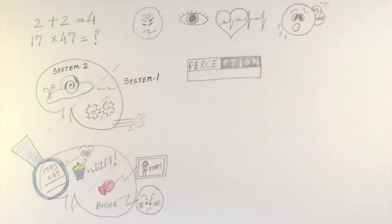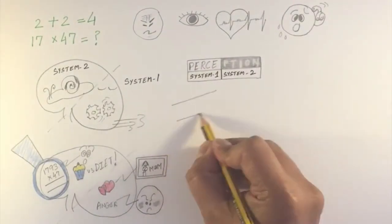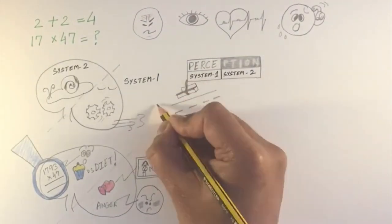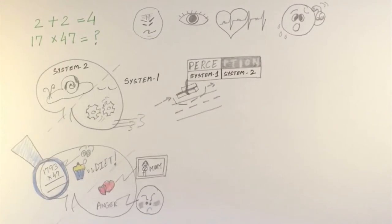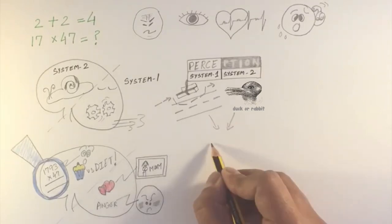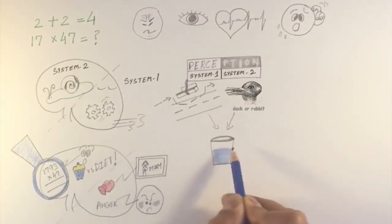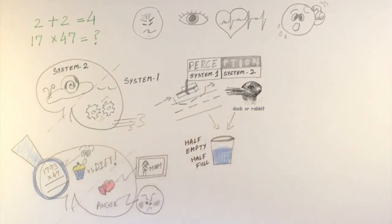We have seen in previous modules how System 1's automated responses are usually very useful in day-to-day thinking, but they can also fool you. Recall the optical and auditory illusions and the cognitive biases we discussed. This can lead to erroneous perception and hence wrong decisions. How you perceive the world determines how you interpret it and you behave accordingly.